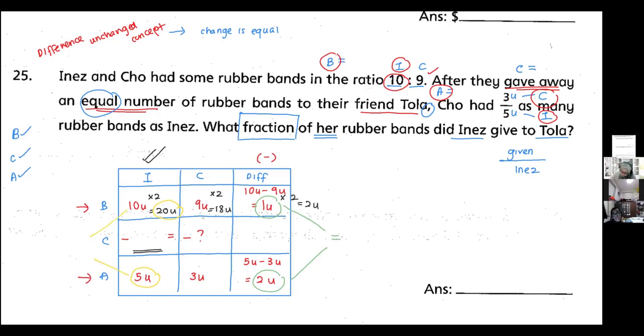So how much did she give away? Before and after, you need to minus. So 20 units minus 5 units—you will get 15 units. To double check for Cho, let's check whether it's the same: 18 units minus 3 units equals 15 units. So we are on the right track.